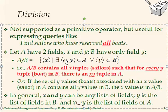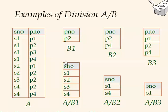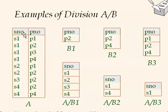For example, we have table A and three possible divisors B1, B2, and B3. For A divided by B1: B1 contains only PNO, and we look for the supply numbers (SNO) such that all PNOs in B1 appear in A. B1 has just one element P1, and S1, S2, S3, and S4 all have P1, so the answer is {S1, S2, S3, S4}.